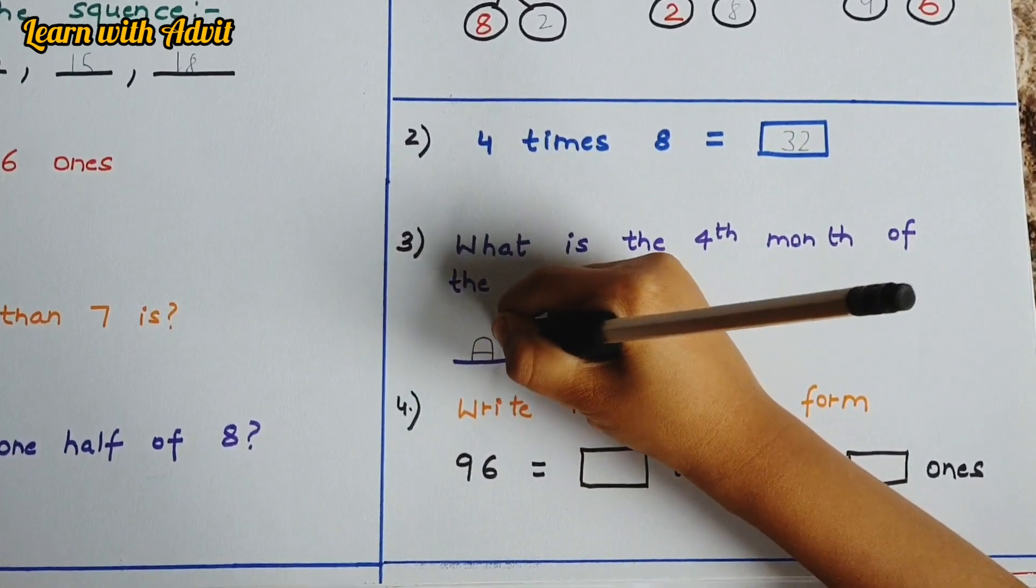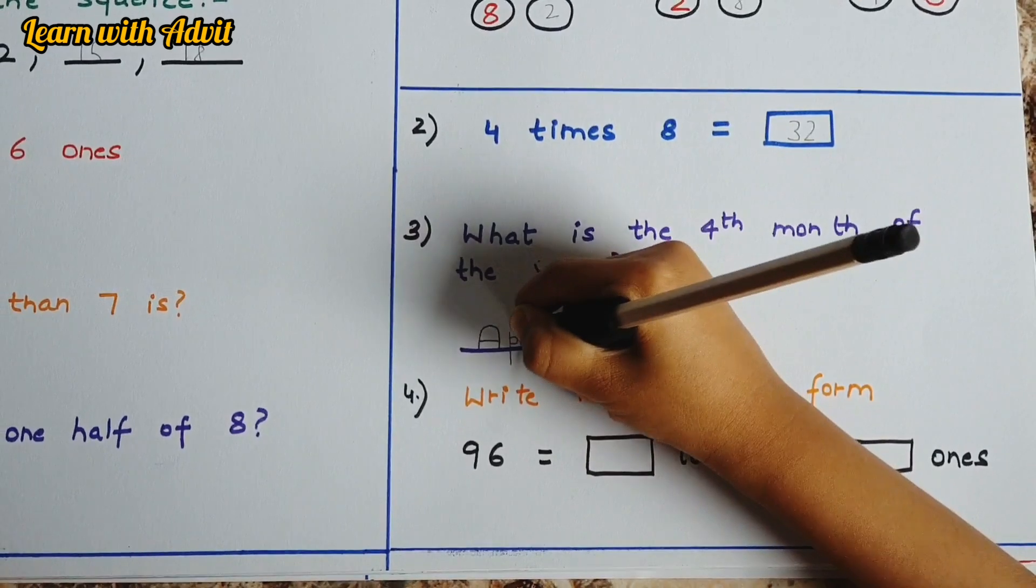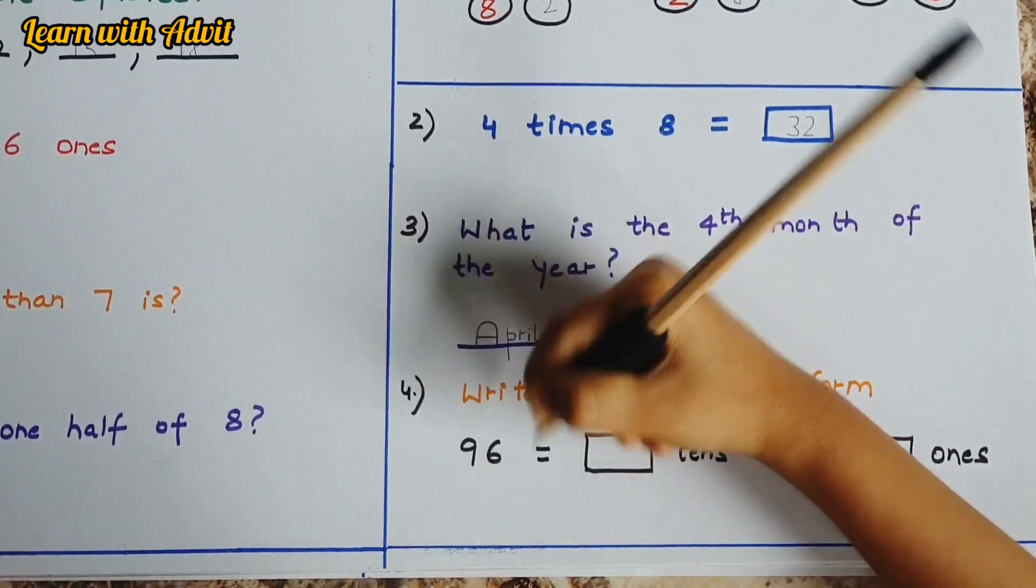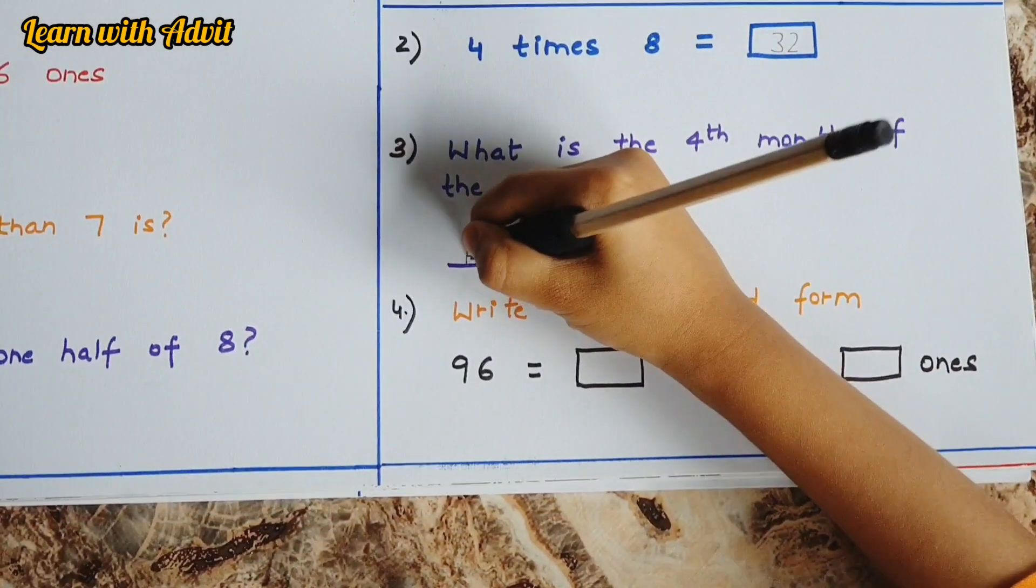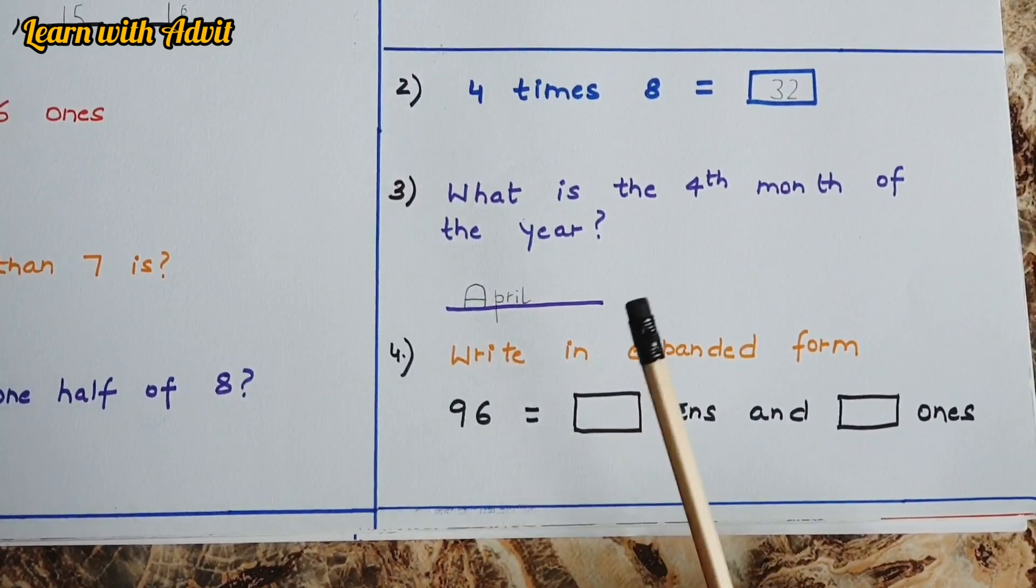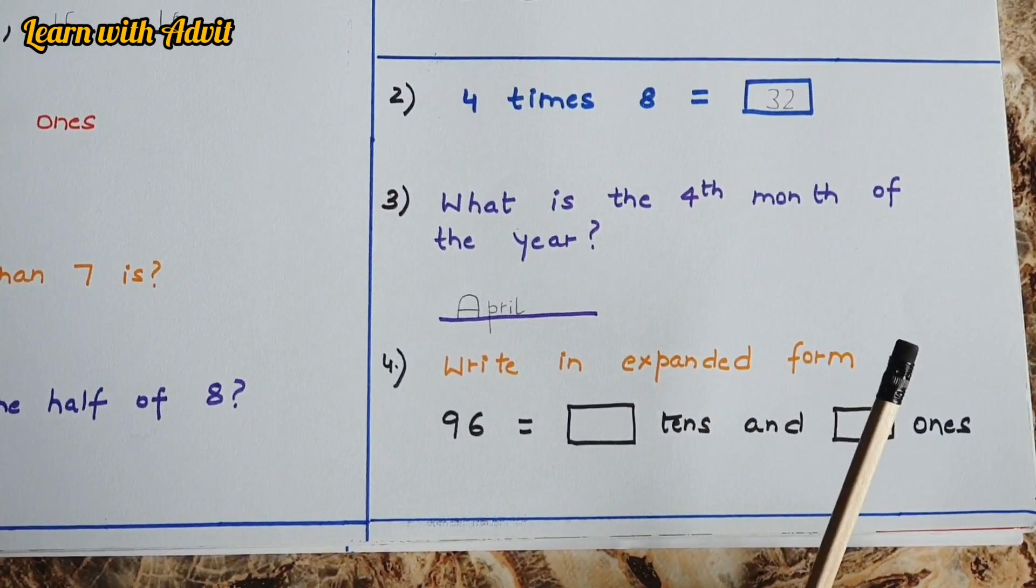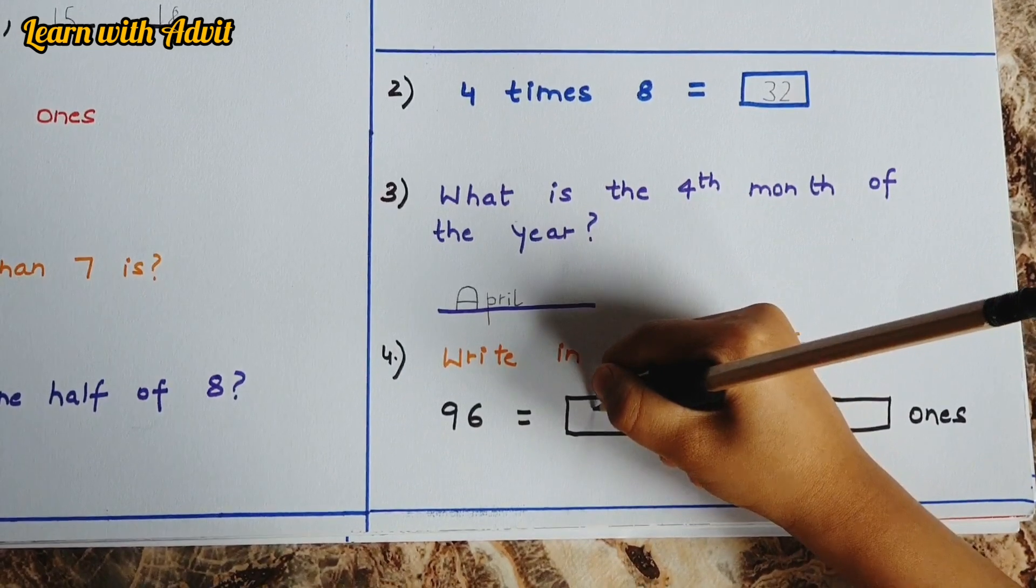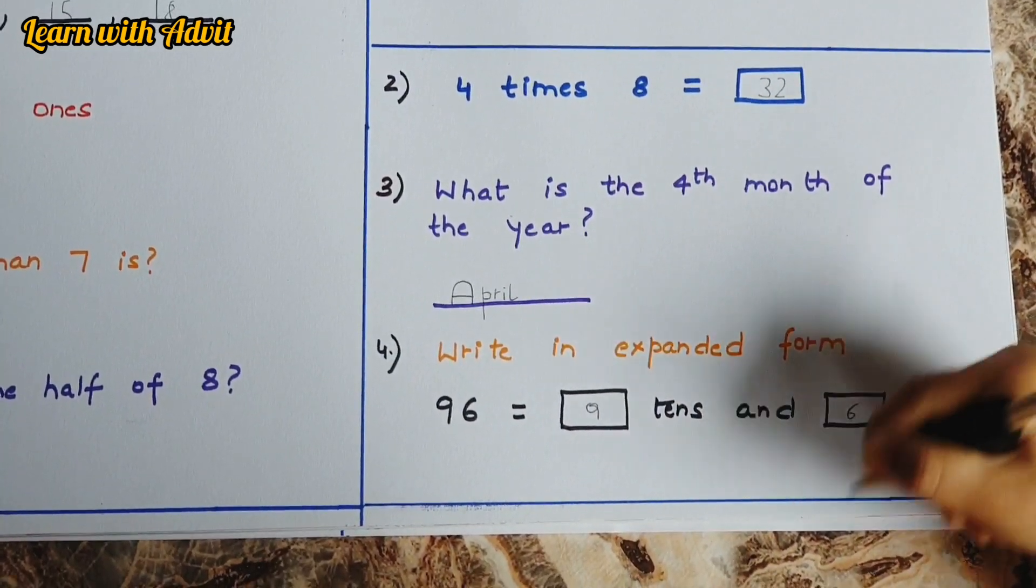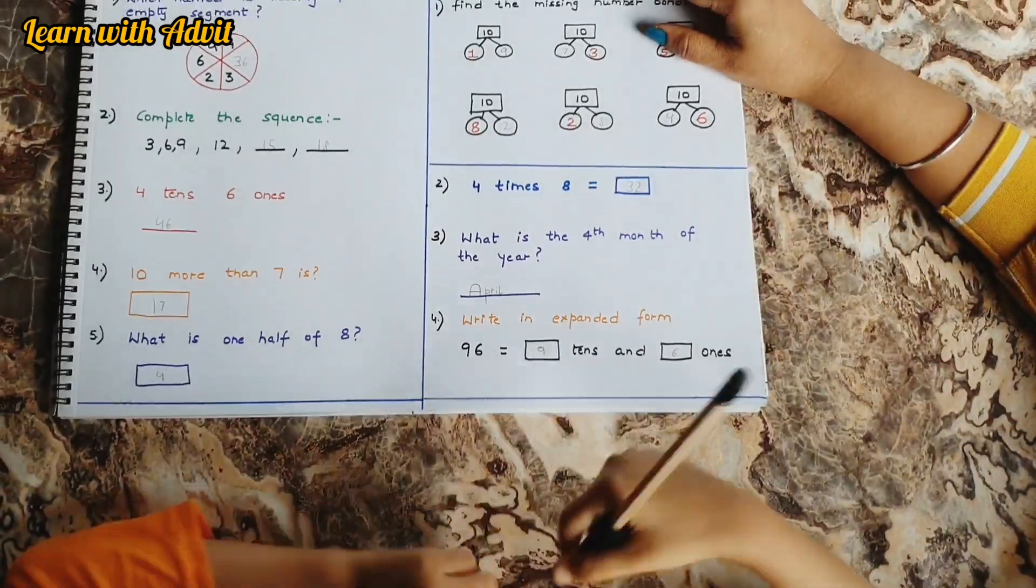Very good. Write in expanded form. It's 96. So write accordingly in tens and ones. 96 equals 9 tens and 6 ones. You enjoy doing this mental worksheet? Yeah, very good.